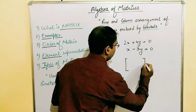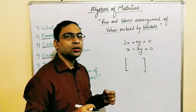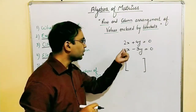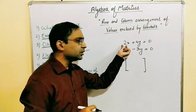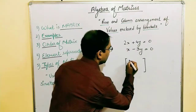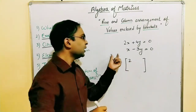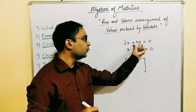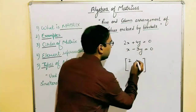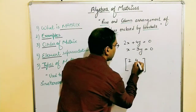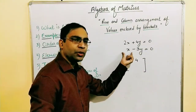For two equations, we consider the coefficients. What is the coefficient of x in equation 1? It is 2. We pick 2 for the first row. Then what is the coefficient of y? It is +4. So we take 4. Then in equation 2, what is the coefficient of x? It is 1.